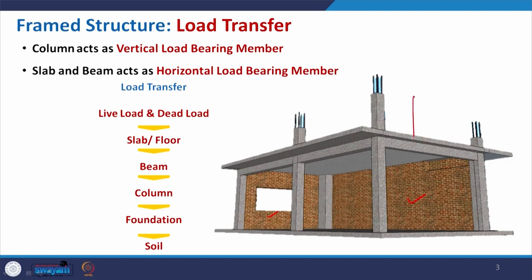Say for example, this is the slab — I just put some load on it. This will be transferred to the beam first, then beam will transfer to the column, column will transfer it to the lower floor, and finally it will reach to the foundation footing and that transmits the load to the soil. In this case column acts as a vertical load bearing member compared to load bearing structure where wall was the vertical load bearing member, and slab and beam acts as horizontal load bearing member.